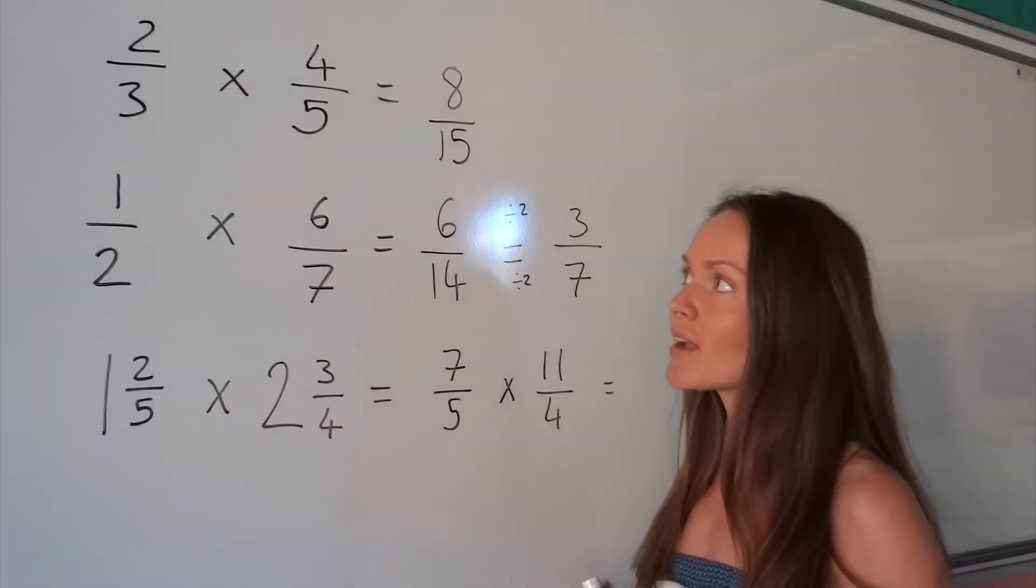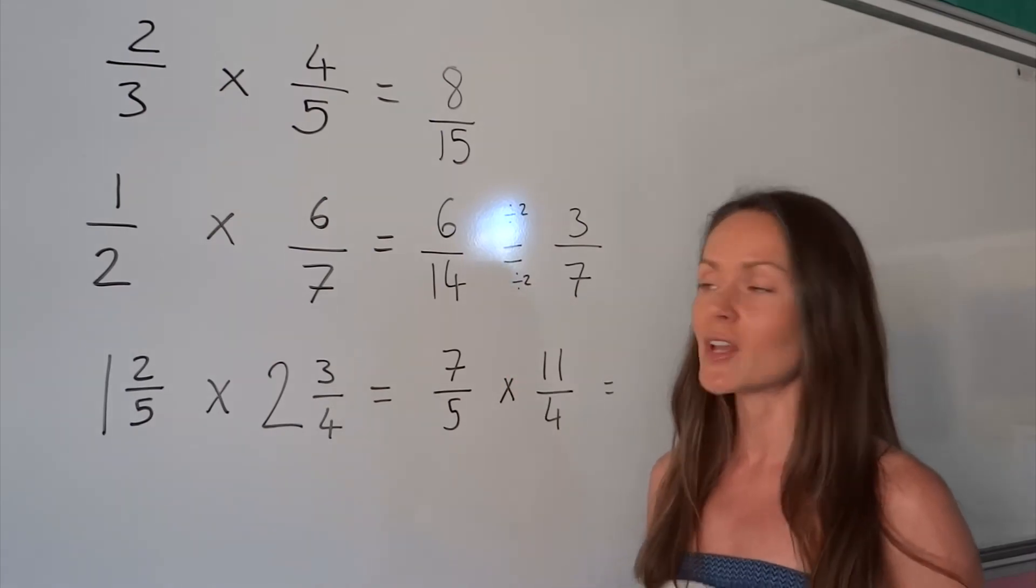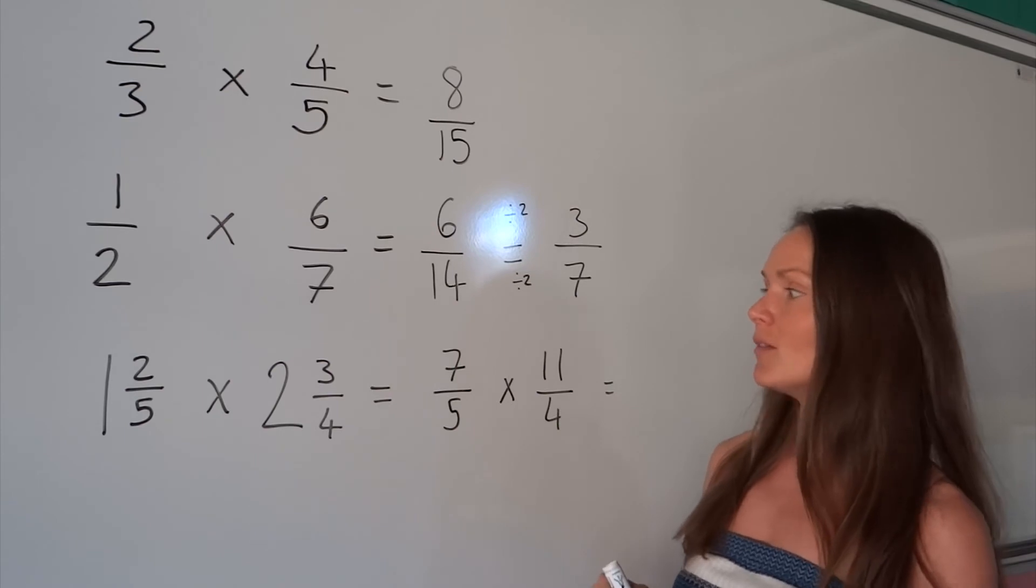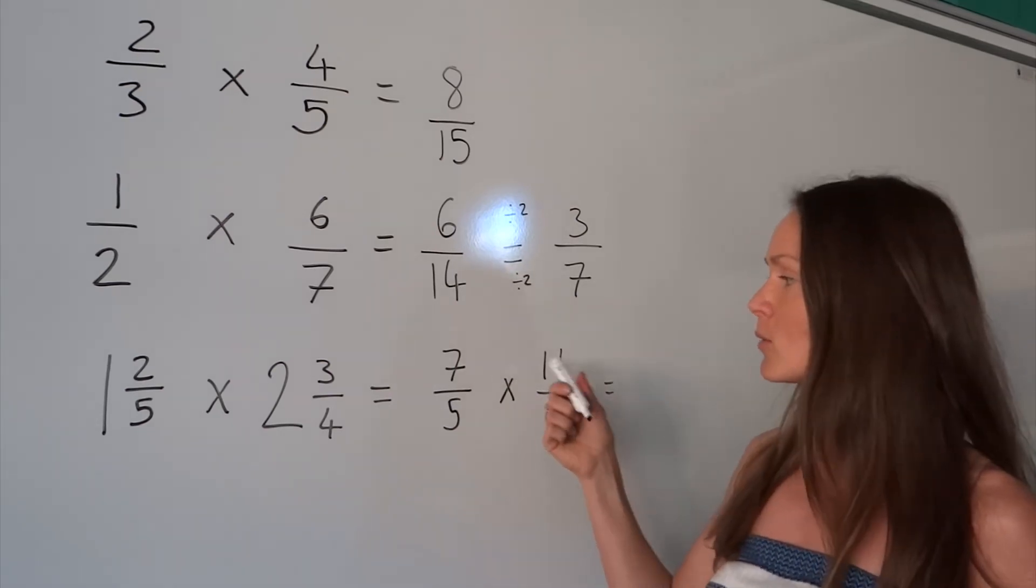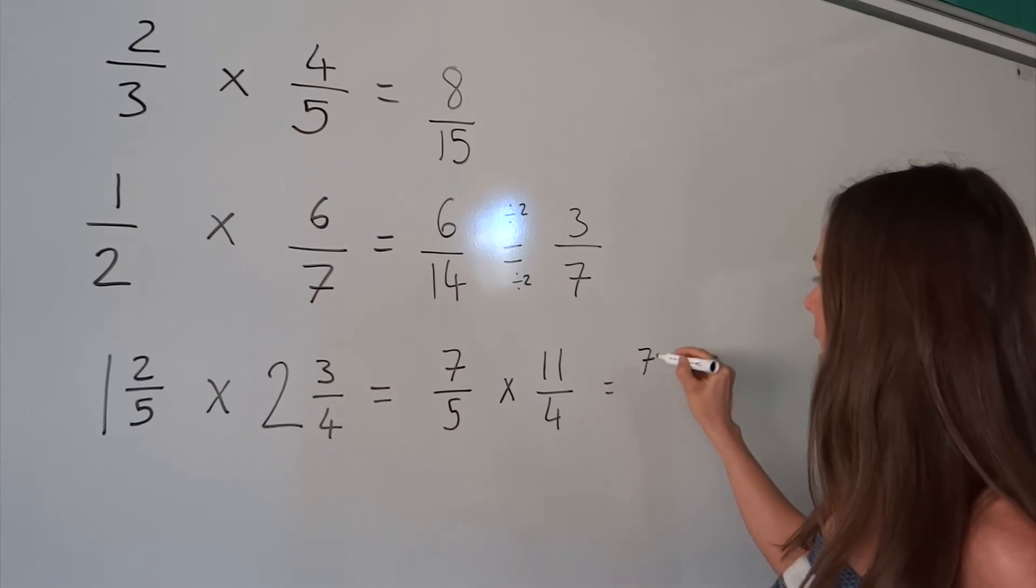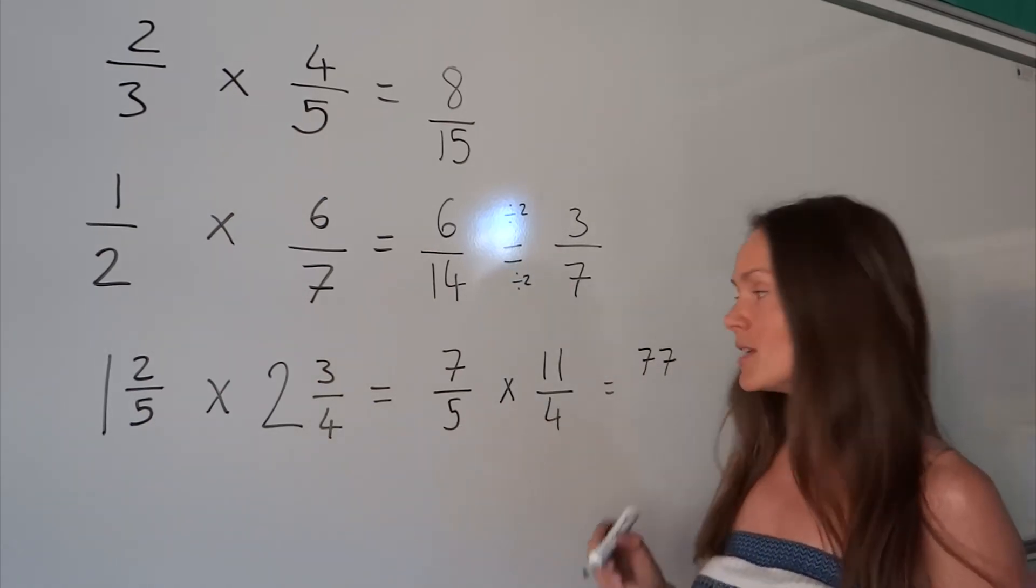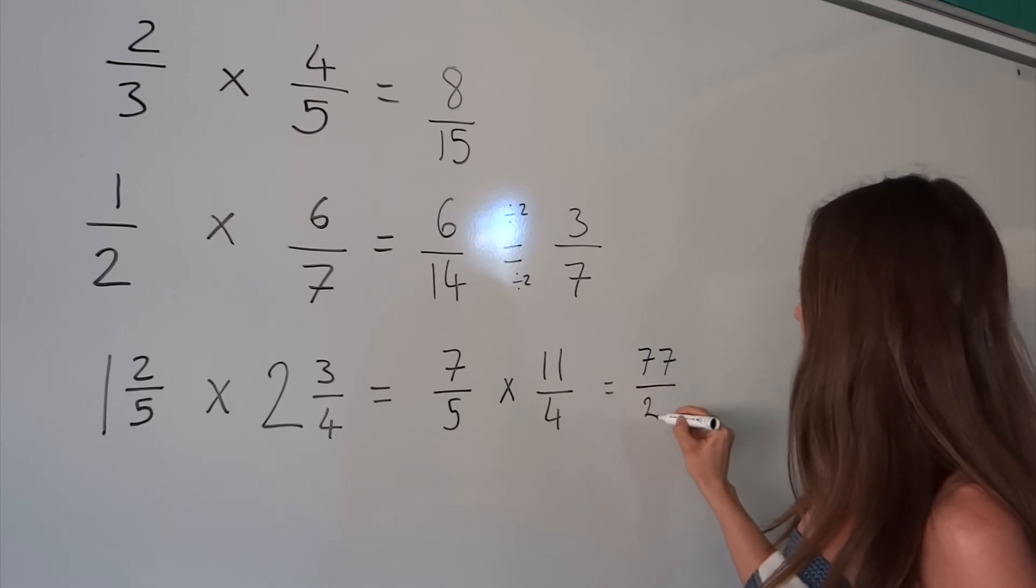Now we just multiply like we did in the first two examples. So to find the numerator in our answer, we multiply the numerators together. So 7 multiplied by 11 is 77. And the same underneath, 5 multiplied by 4 is 20.